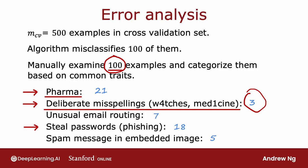That doesn't mean it's not worth doing, but when you're prioritizing what to do, you might decide not to prioritize this as highly. I'm telling this story because I once actually spent a lot of time building algorithms to find deliberate misspellings in spam emails, only to realize much later that the net impact was quite small. I wish I had done a more careful error analysis first.